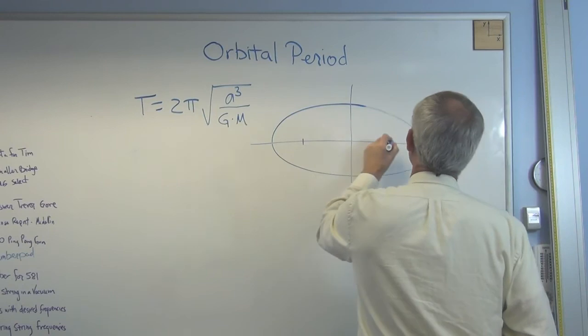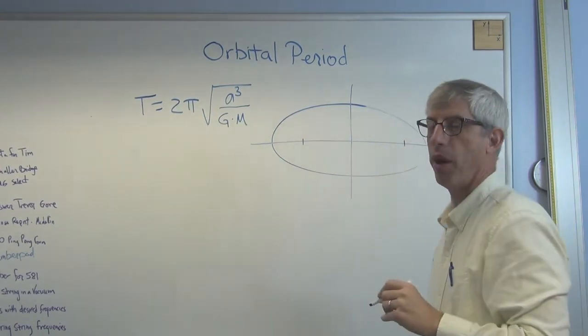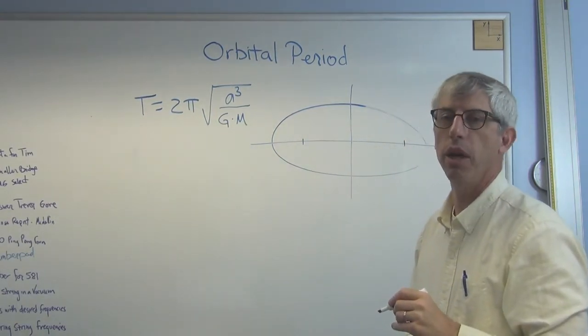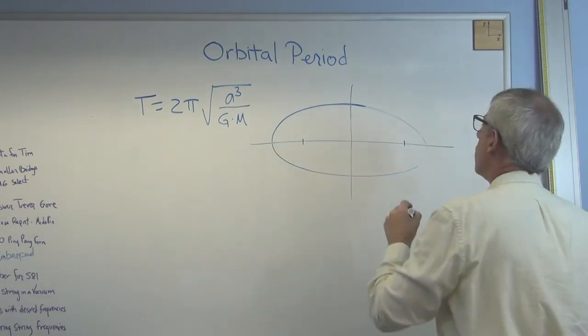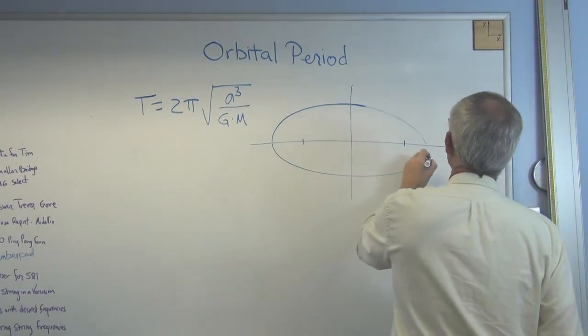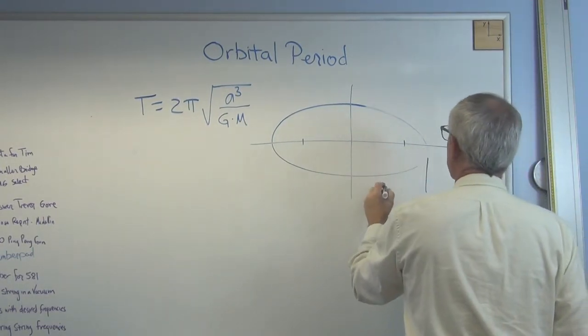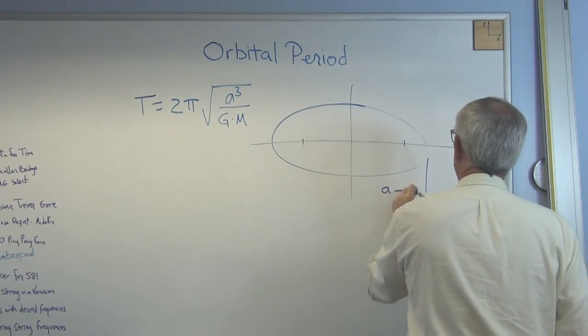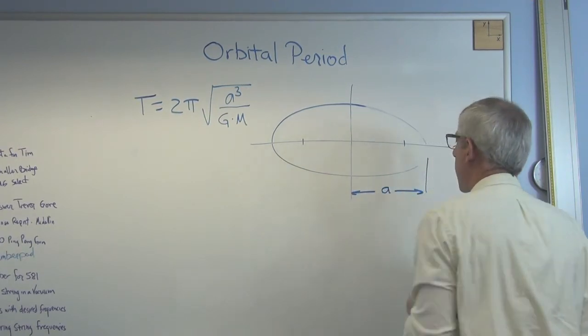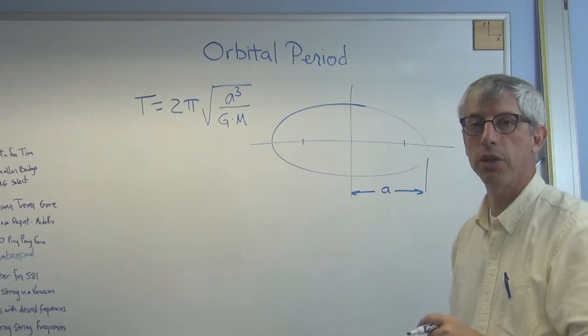And the ellipse has two points. Each point is called a focus, the pair are called foci. And the half, the long distance here, the length of that is called a, and a is the semi-major axis.